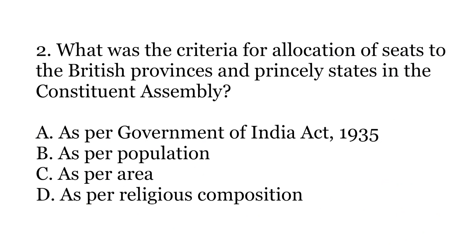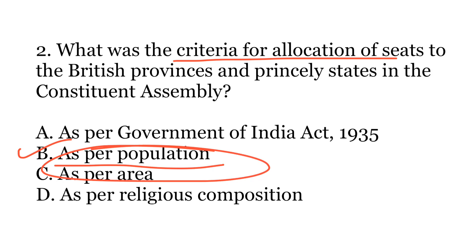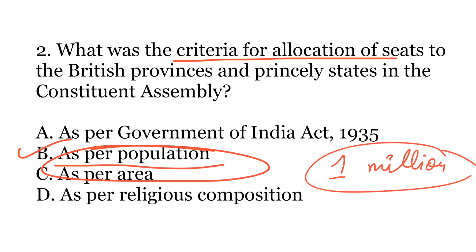The second question is: what was the criteria for allocation of seats to the British provinces and princely states in the Constituent Assembly? Options: A — as per the Government of India Act 1935; B — as per the population; C — as per the area; or D — as per the religious composition. The correct answer is B — as per the population. The criteria was one seat for every million population, meaning one seat for every 10 lakh Indians.